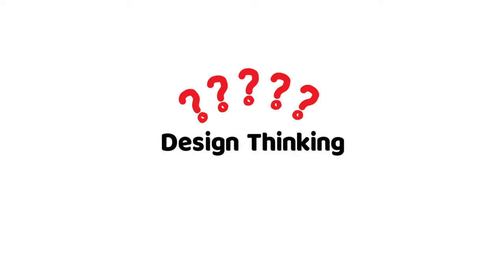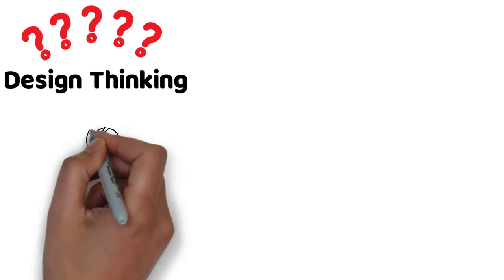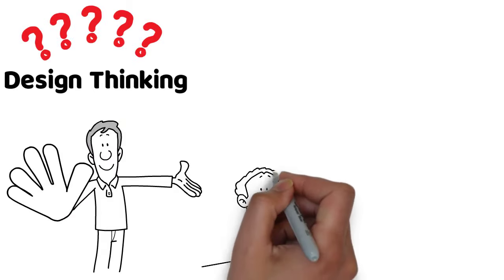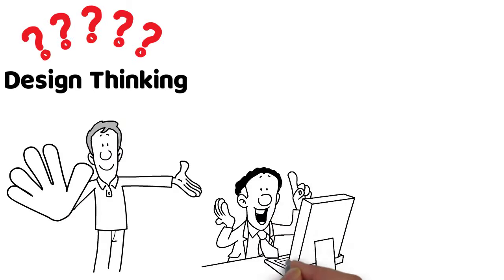Design Thinking, what is it? Design thinking is a process made up of 5 stages that companies use to create insightful ideas that solve problems customers actually have.